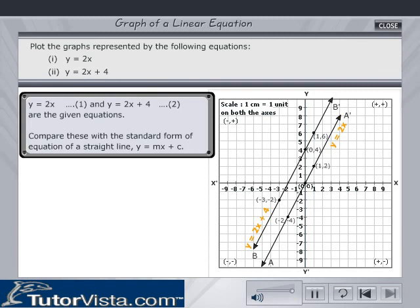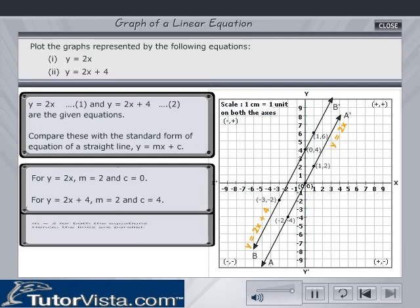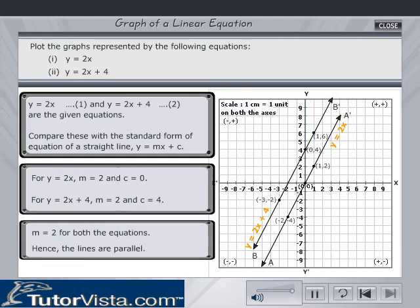y is equal to 2x and y is equal to 2x plus 4 are the given equations. Compare these with the standard form of the equation of a straight line, that is, y is equal to mx plus c. For y is equal to 2x, m is equal to 2 and c is equal to 0. While for y is equal to 2x plus 4, m is equal to 2 and c is equal to 4. m is equal to 2 for both equations. Hence the lines are parallel.